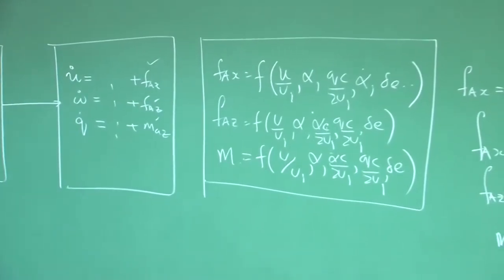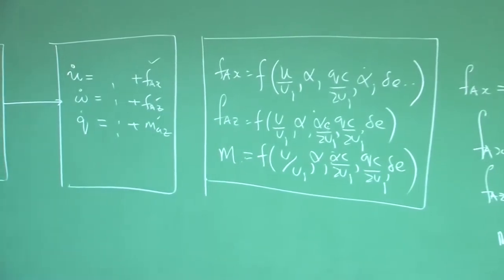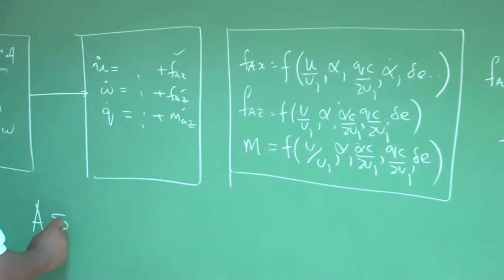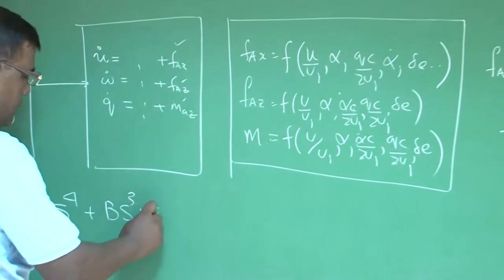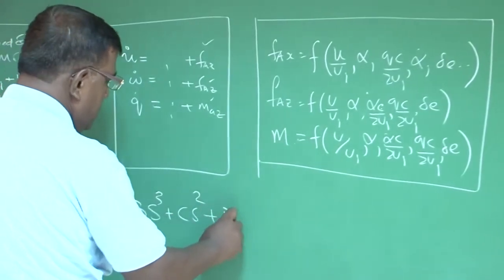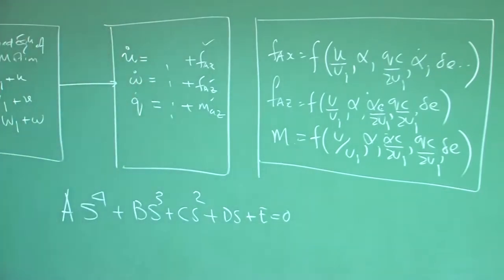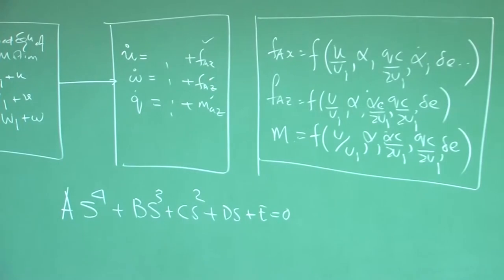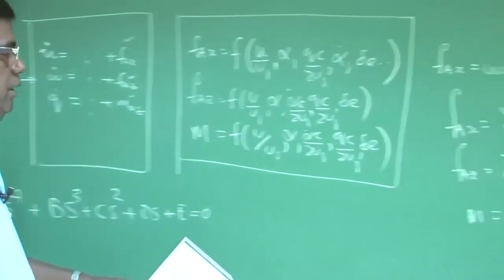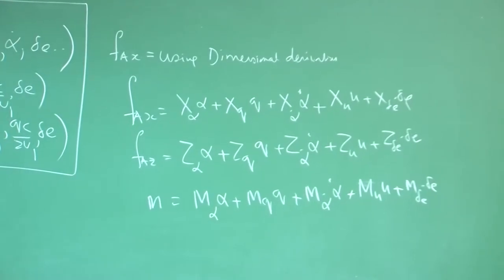To find the roots, we set the determinant of that stability matrix equal to zero, and we got an equation of the form S⁴ + BS³ + CS² + DS + E = 0, where A, B, C, D, E can be evaluated using the dimensional derivatives as well as flight conditions.